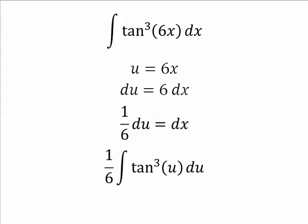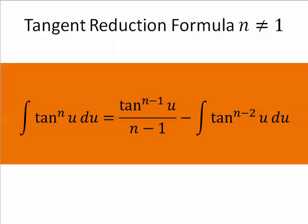All right. So let's look at the power reducing formula again. For our problem, n equals 3. So what's that going to look like? If n equals 3, I'll have tangent squared u over 2 minus the integral of tangent. Well, let's say n equals 3, so 3 minus 2 is 1. It would be just tangent.